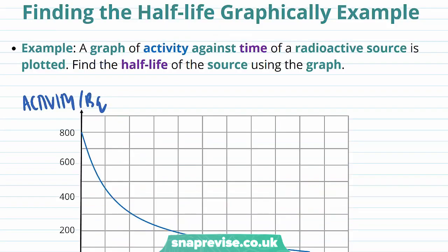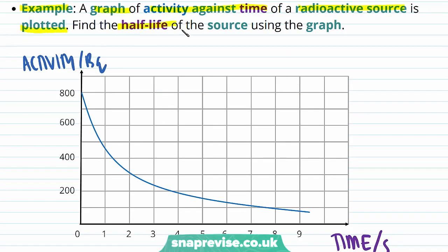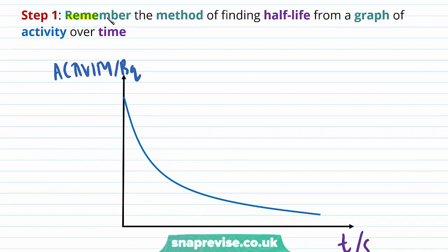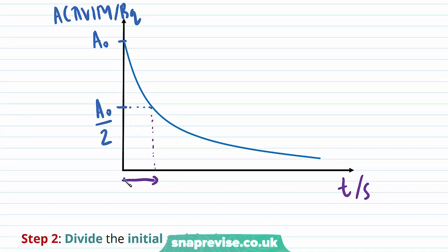We're now going to do an example of finding the half-life graphically. A graph of activity against time of a radioactive source is plotted — find the half-life of the source using the graph. Step 1 is to remember the method: there is an initial activity A₀, and the half-life is the time taken for this activity to decrease by half, i.e. the time taken for it to become A₀ divided by 2.